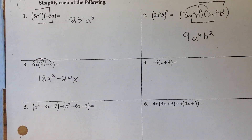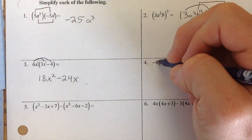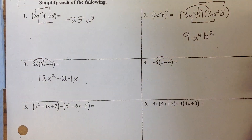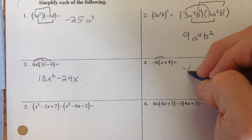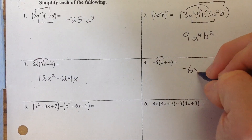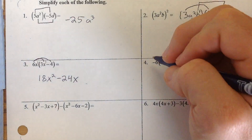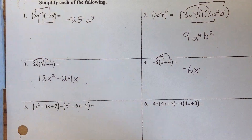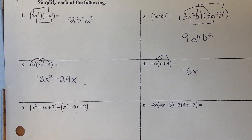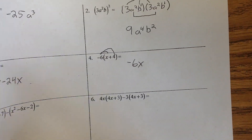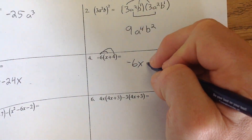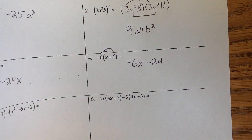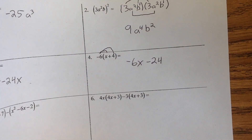Number 4 is even easier because there's no letter on the outside. So it's just negative 6 times x, which is negative 6x. And negative 6 times positive 4 gives us negative 24. That's the kind of distribution we've been doing all year long.